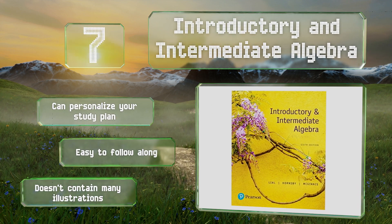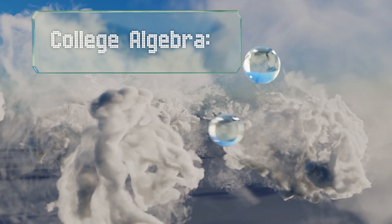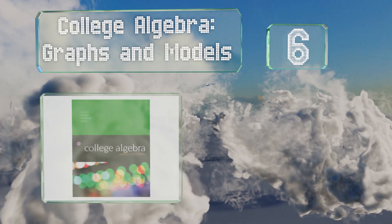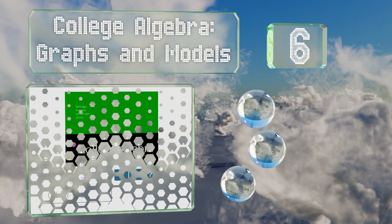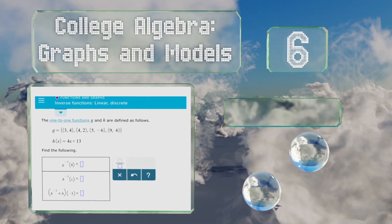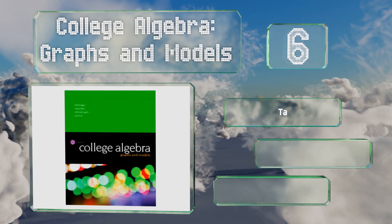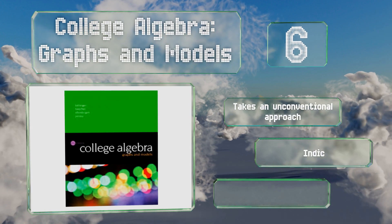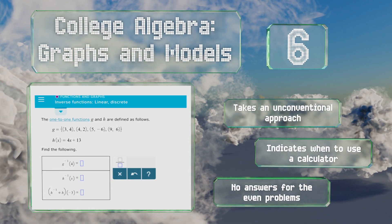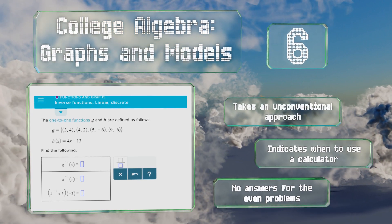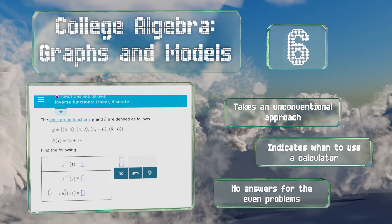Moving up our list to number six, College Algebra: Graphs and Models offers lots of visual references with side-by-side algebraic and graphical solutions. It's accompanied by a MyMathLab online course and has review exercises throughout to assist in the learning process and prepare students for exams. It takes an unconventional approach and indicates when to use a calculator, however there are no answers for the even problems.